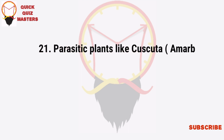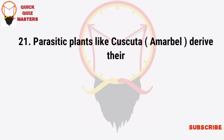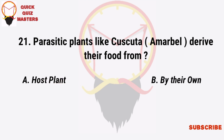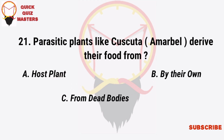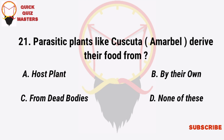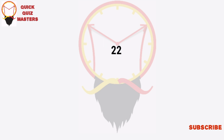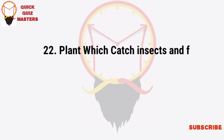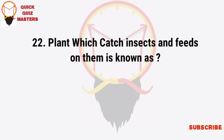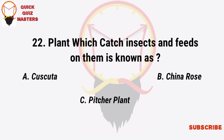Parasitic plants like Cuscuta (Amarbel) derive their food from: the host plant, by their own, from dead bodies, none of these. Plants which catch insects and feed on them are known as: Cuscuta, China rose, pitcher plant, rose.